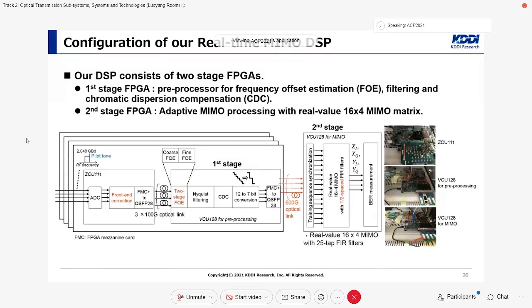This figure shows the overall configuration of our DSP includes the MIMO processing. Our DSP consists of two-stage FPGAs. As FPGAs, Vertex Ultrascale Plus VCU-128 evaluation boards were utilized. We assume 2GB DP-QPSK signals with a frequency pilot tone were received. The data were digitized by 4-channel 12-bit analog-to-digital converters, which were embedded on the Zinc Ultrascale Plus VCU-111 evaluation board. The data were digitized at two samples per symbol, and front-end collection were performed.